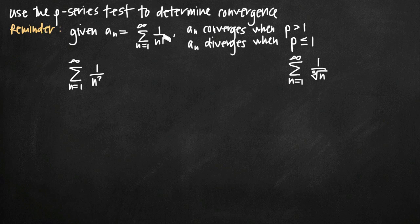So if we have some series and we can get it into this form where we have 1 divided by n raised to the p, then we can use the value of p to determine whether or not the series is convergent. Obviously that's going to be really easy to do when we already have the series in this form. Sometimes we can simplify our series using algebra and end up with this form, and then we can use the p-series test to determine convergence.